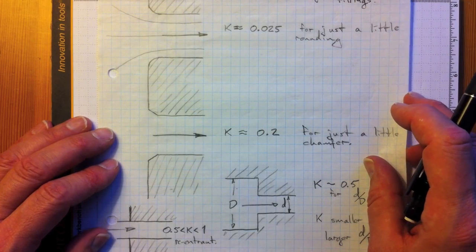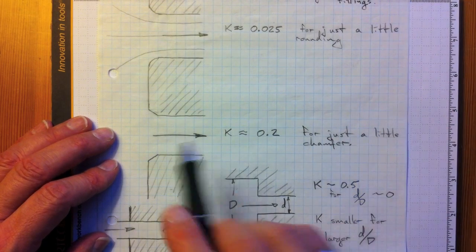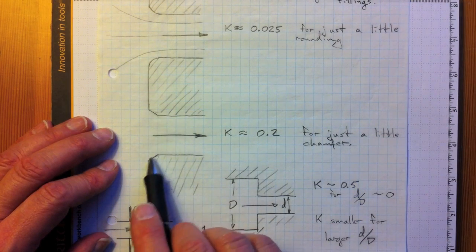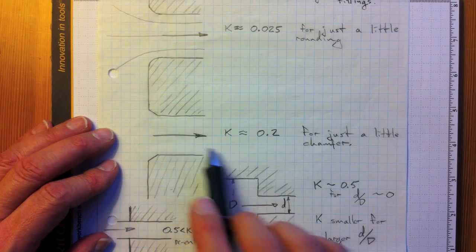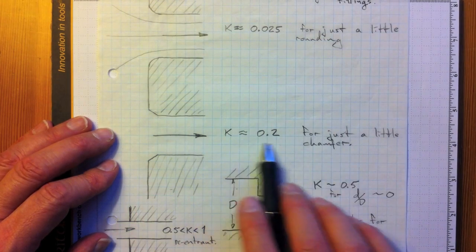Even if we don't do it smoothly and with a nice rounding, even if we just chamfer that edge at 45 degrees just a little bit, we'll get from 0.5 down to 0.2.